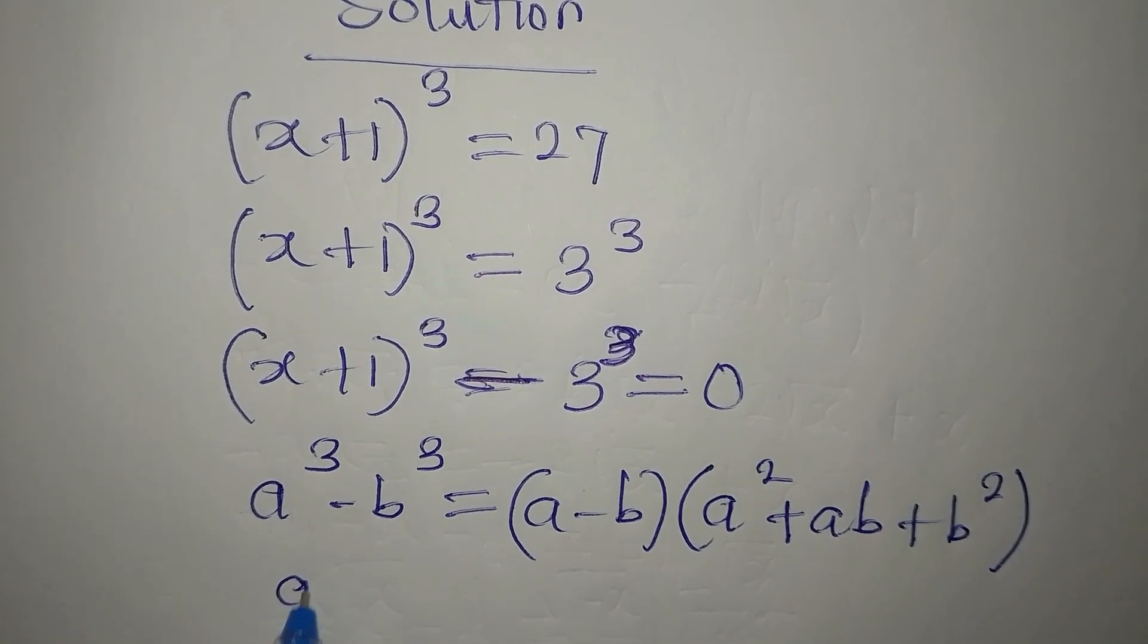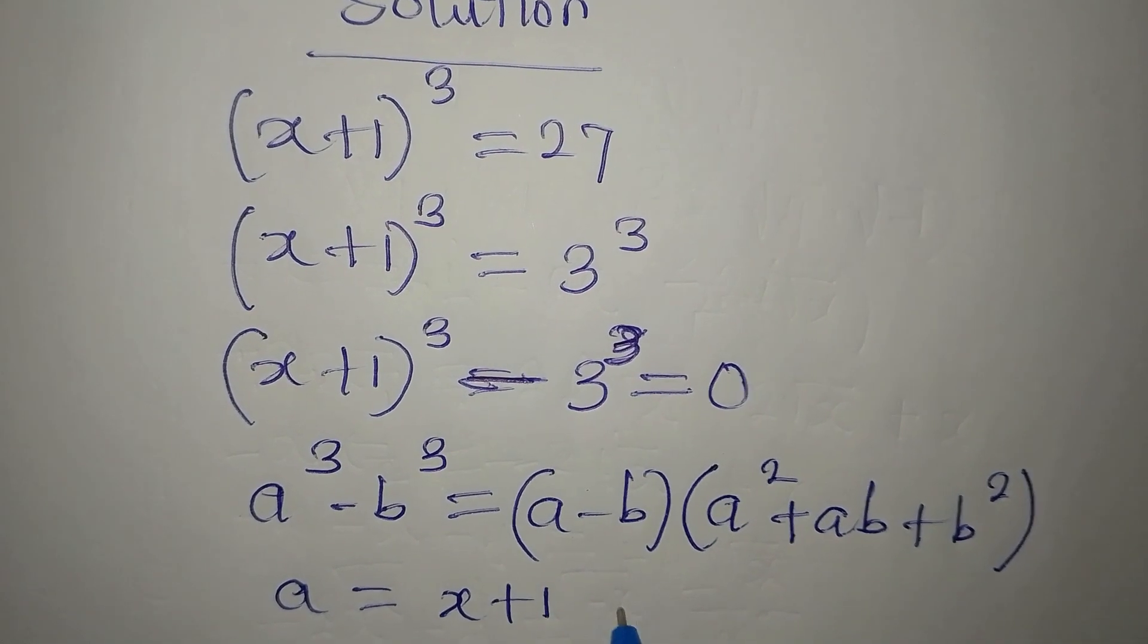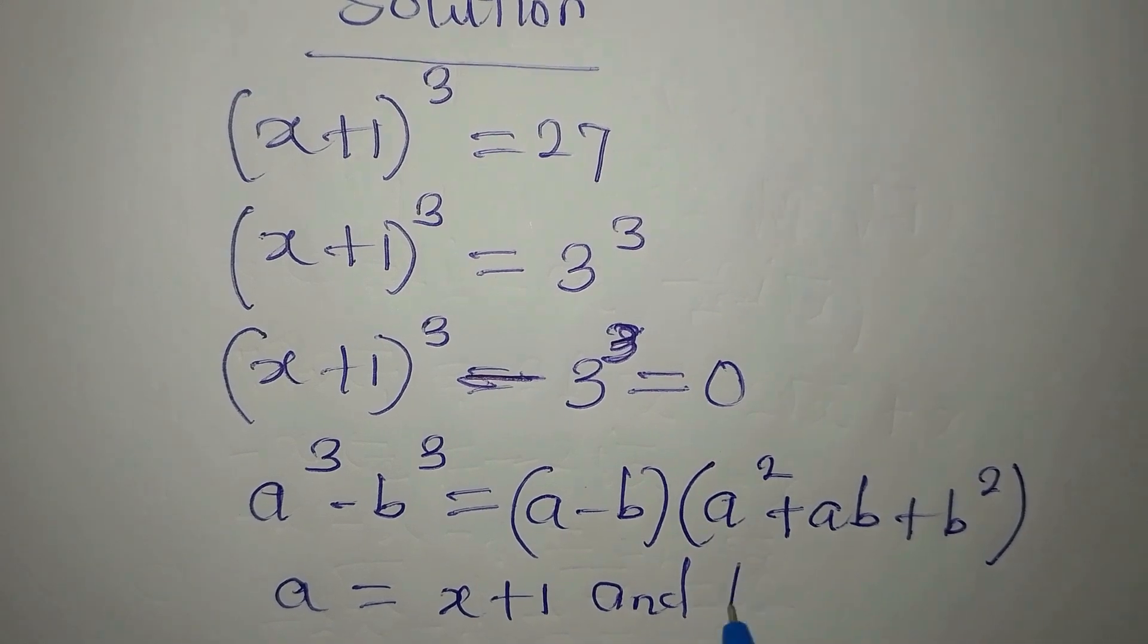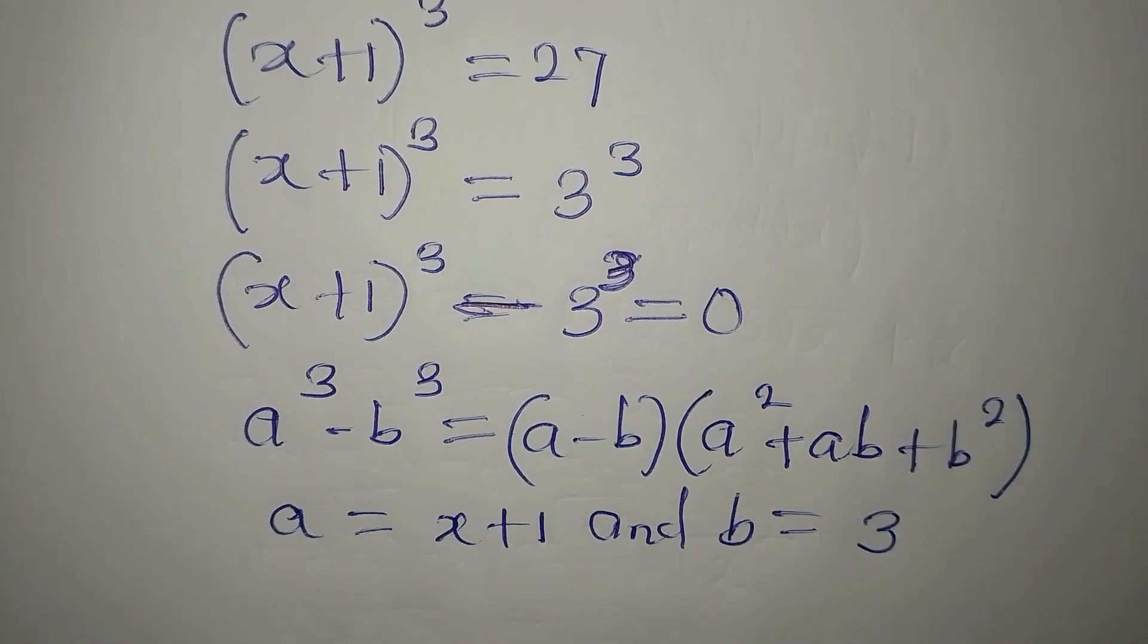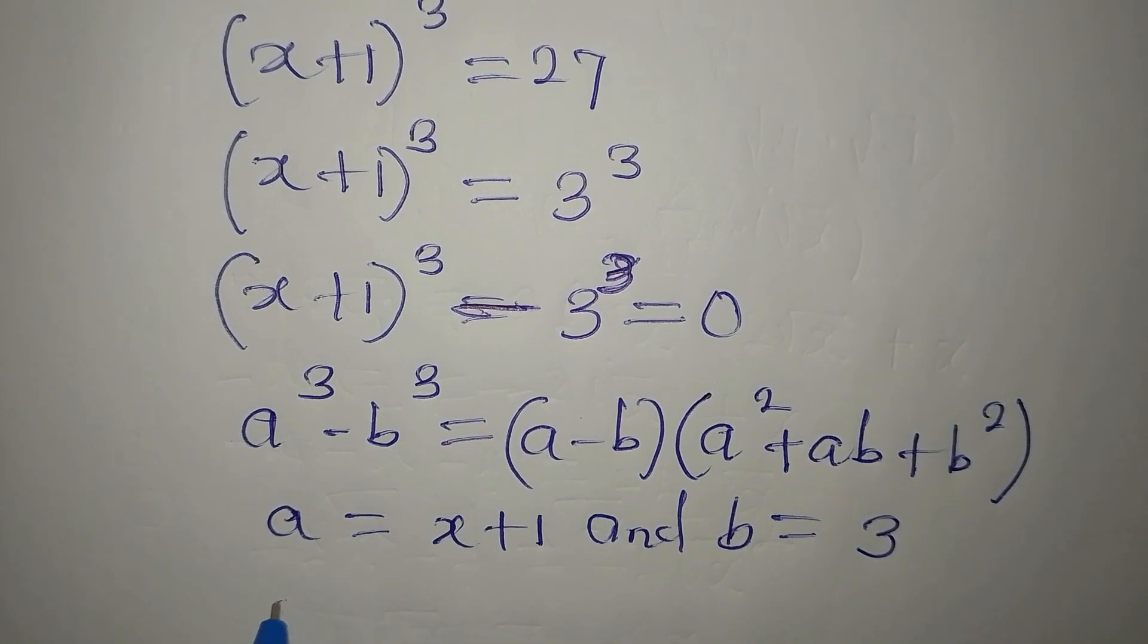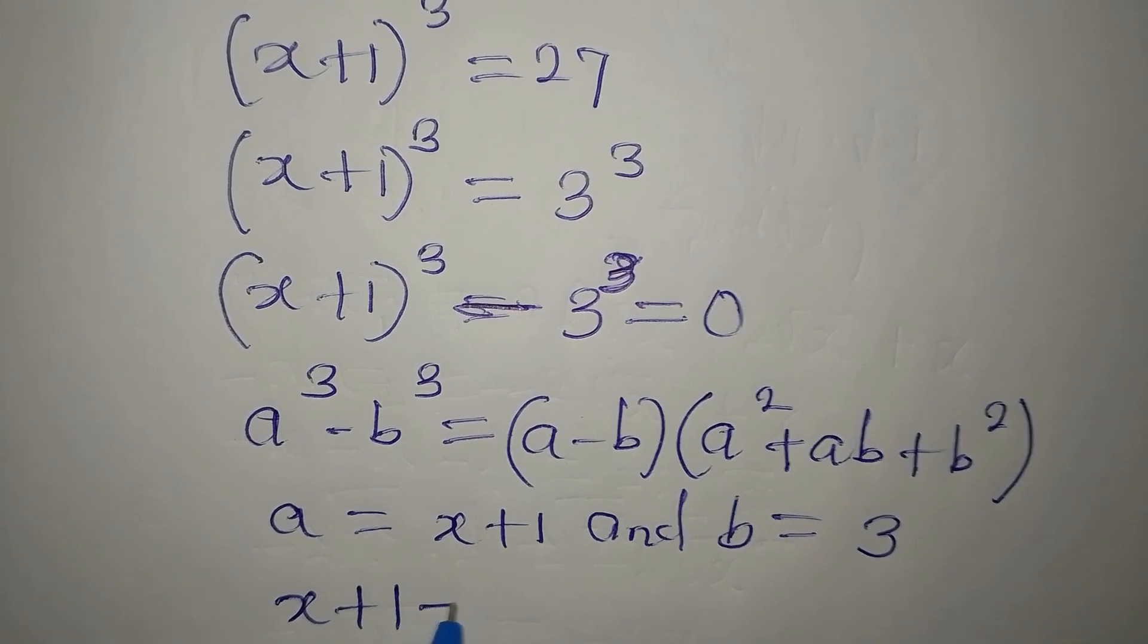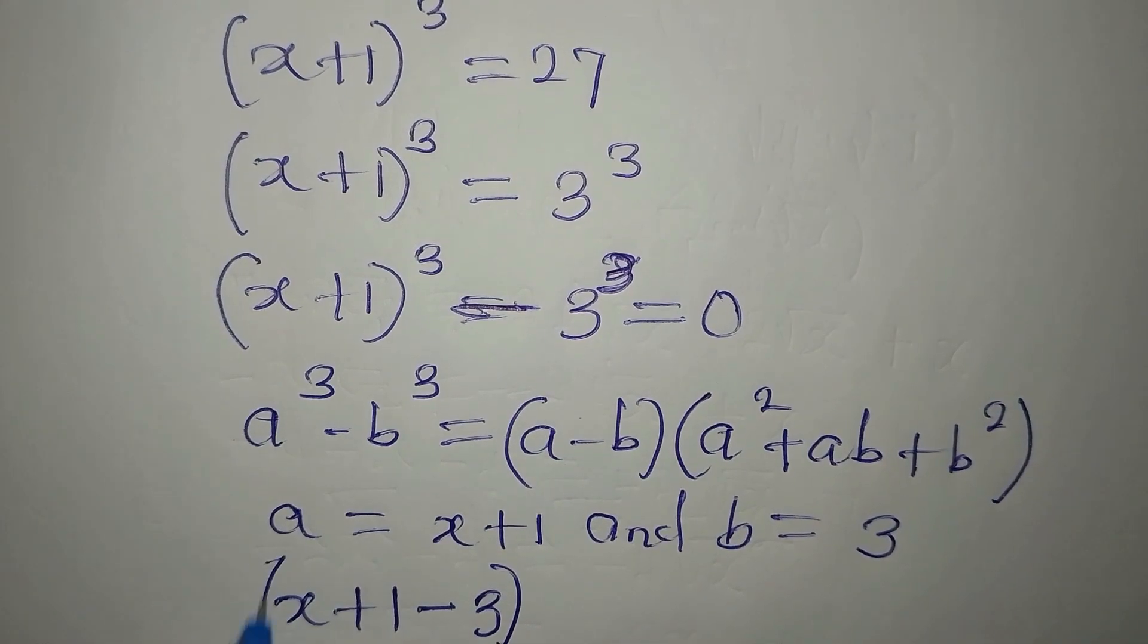And for this now, our a is equal to x plus 1 and our b is equal to 3. So let's substitute into this problem. So in place of a minus b, I'm going to write x plus 1 minus 3. That's what we have in the first bracket.